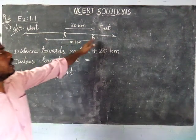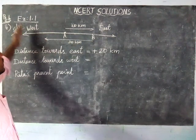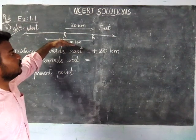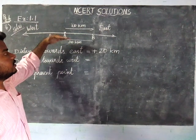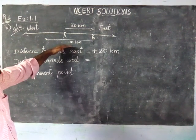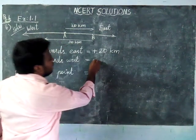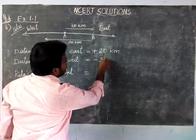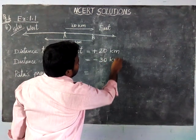Next one, from point B he moves into west side. They ask us to mark in which integer you will use it. So we are going to take it as a negative integer, minus 30 km.